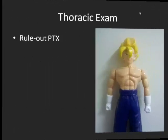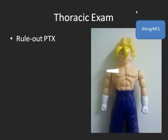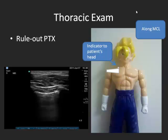In a thoracic exam, the main thing you want to do is rule out pneumothorax. This is a quick and easy test everyone should be able to do. The patient should first be lying down flat so that any air comes to the surface of the chest. If they are sitting up, you may miss a pneumothorax because air will sit up in the apices. You go along the midclavicular line between two ribs with the indicator pointing towards the patient's head. You will see rib shadow, rib shadow, tissue, and then lung.